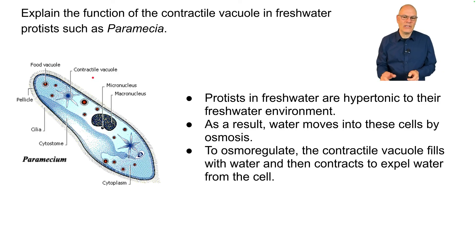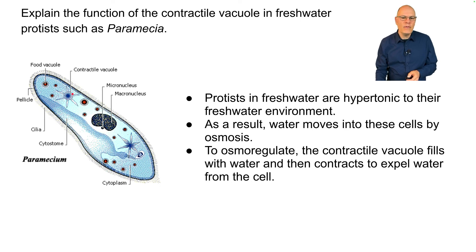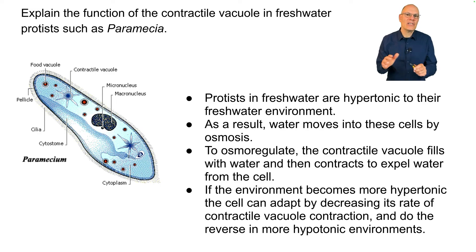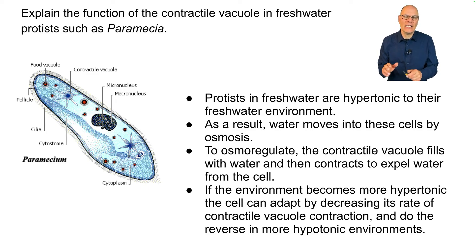To osmoregulate — meaning to regulate osmotic balance — the contractile vacuole fills with water and then contracts to expel water from the cell. If the environment becomes more hypertonic, the cell can adapt by decreasing its rate of contractile vacuole contraction, and do the reverse in more hypotonic environments.